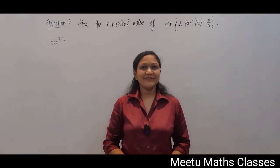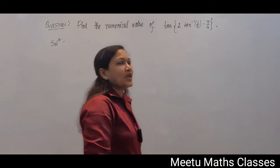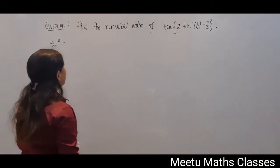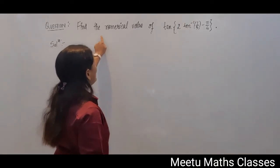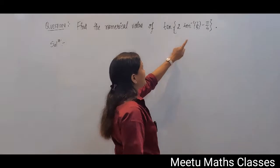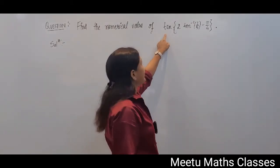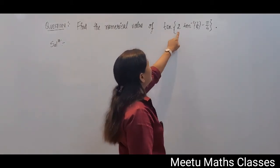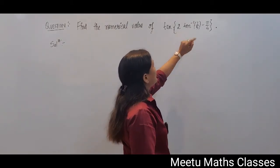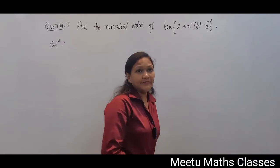Hello students, welcome to Maths classes. Your question is: find the numerical value of this function, and your function is tan of 2·tan⁻¹(1/5) minus π/4.